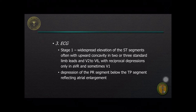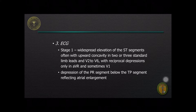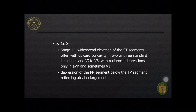ECG changes in the absence of massive effusion typically evolve through four stages. In stage 1, there is widespread elevation of the ST segments, often with upward concavity in leads 2 or 3 standard limb leads and V2 to V6 in the precordial leads, with reciprocal depressions only in AVR and sometimes V1. Depression of the PR segment below the TP segment reflects the presence of atrial enlargement.